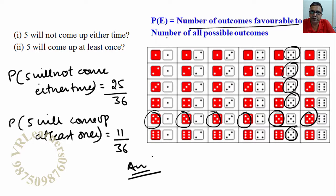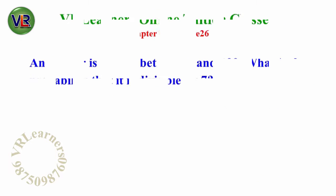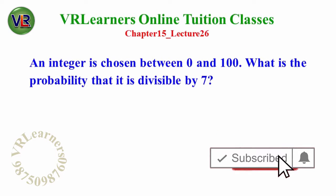The only confusion students might have is in understanding the question: what does it mean that 5 didn't appear or that 5 appeared? So just read the question carefully, read it calmly, and understand it.